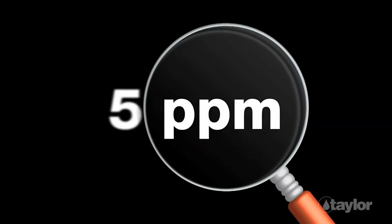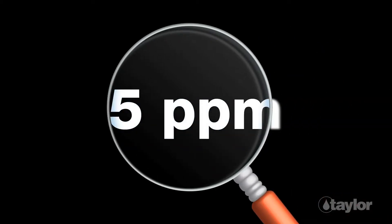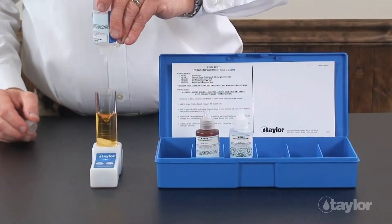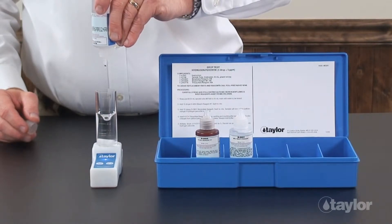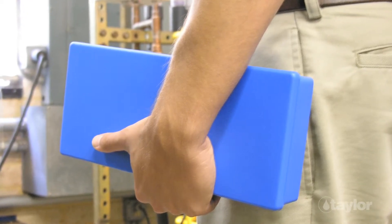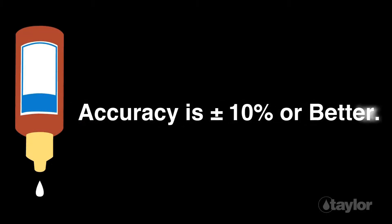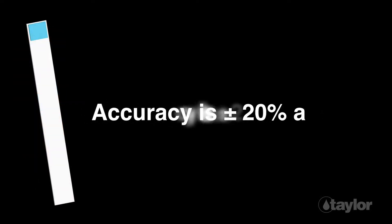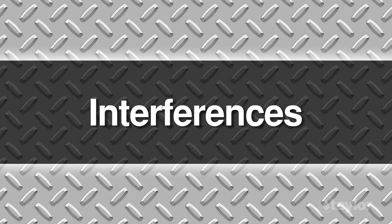When applying hydrogen peroxide, it is important to monitor the chemical's residual levels. Taylor's K1825 makes it easy to determine these levels. Taylor's method for testing hydrogen peroxide is categorized as a titration. Drop count titrations are preferred for field testing because of their portability and ease of use. Taylor's drop tests have an accuracy of plus or minus 10 percent or better, while hydrogen peroxide test strips have an accuracy of only plus or minus 20 percent at best.